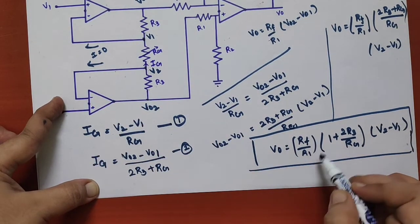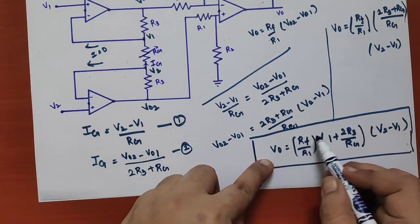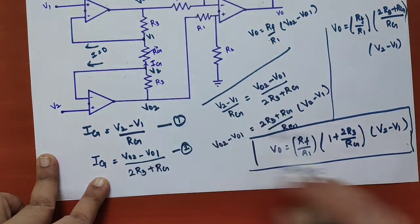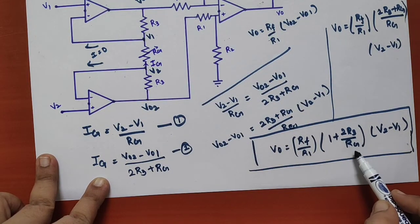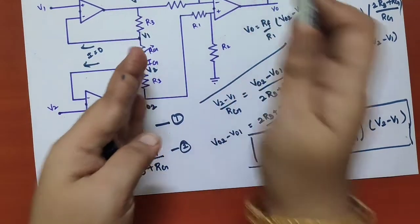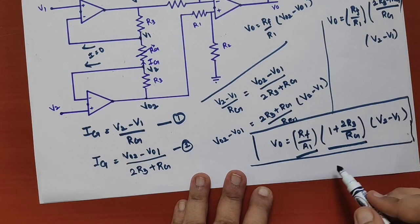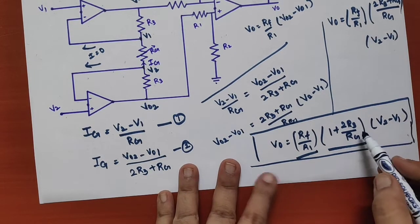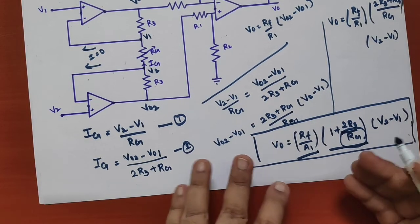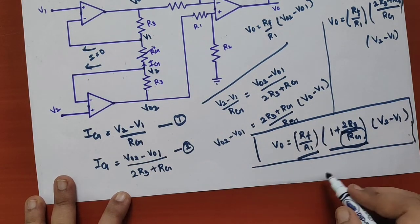Here, RF / R1 is the amplification factor of the differential amplifier (second stage), and (1 + 2R3 / Rg) is the amplification factor of the voltage follower amplifier (first stage). Rg is the variable resistance. By varying the value of Rg, we can get the desired differential gain by means of this 3 op-amp instrumentation amplifier. Thank you.